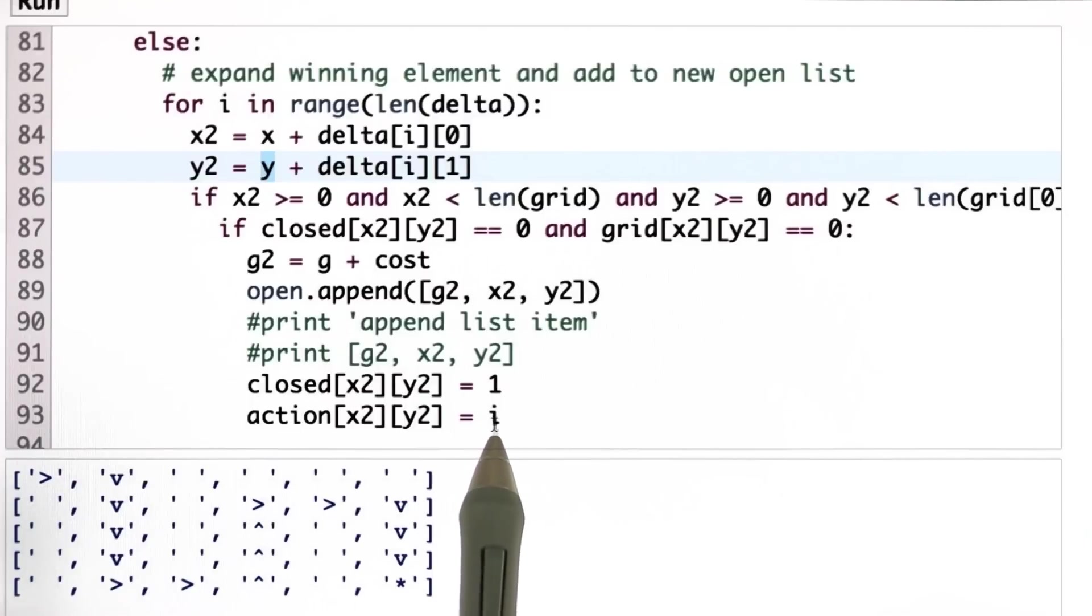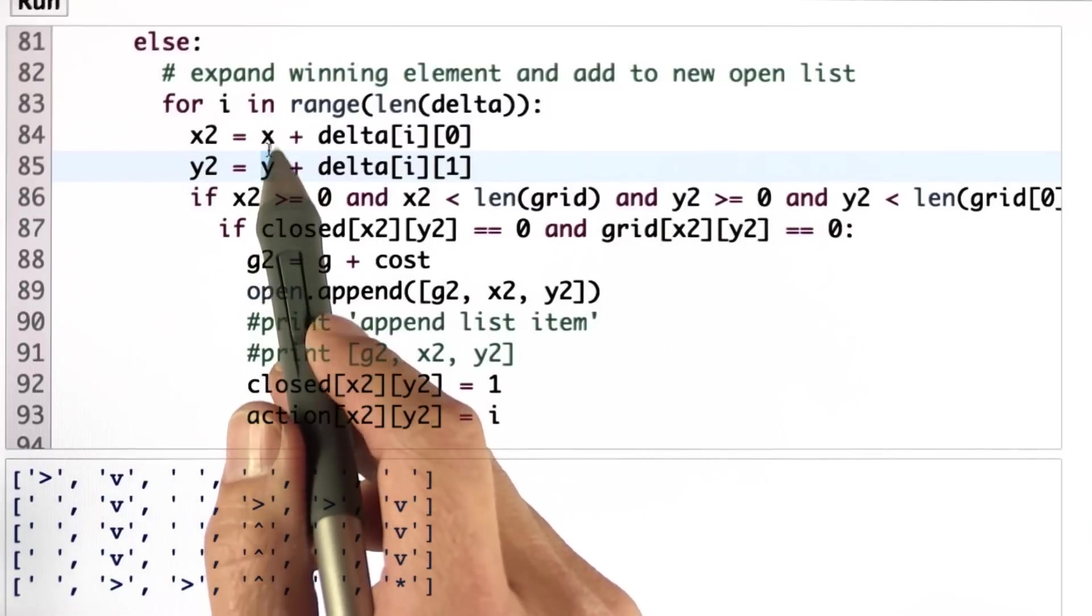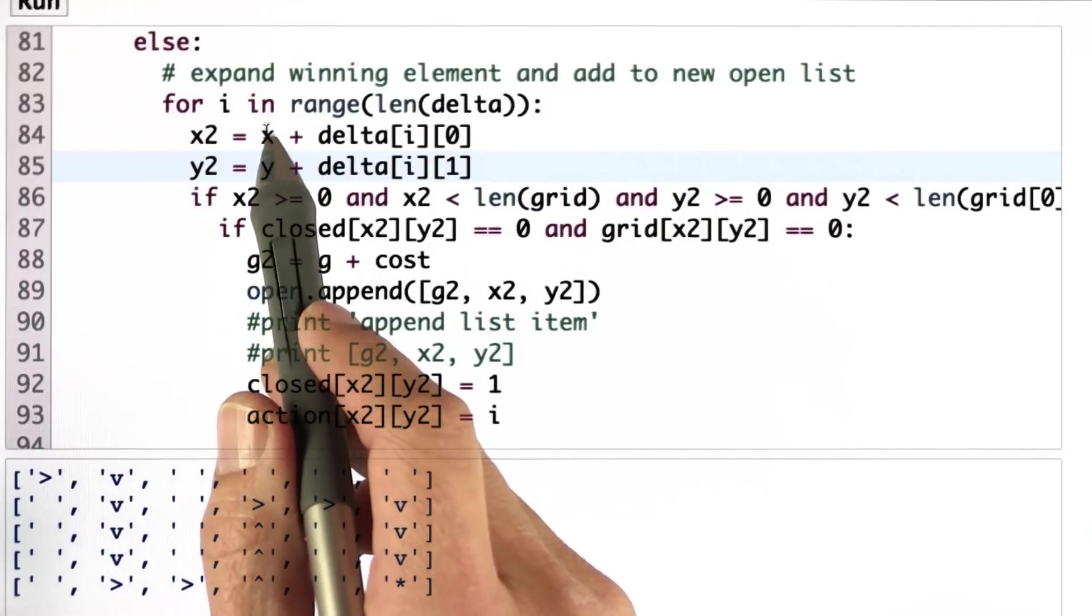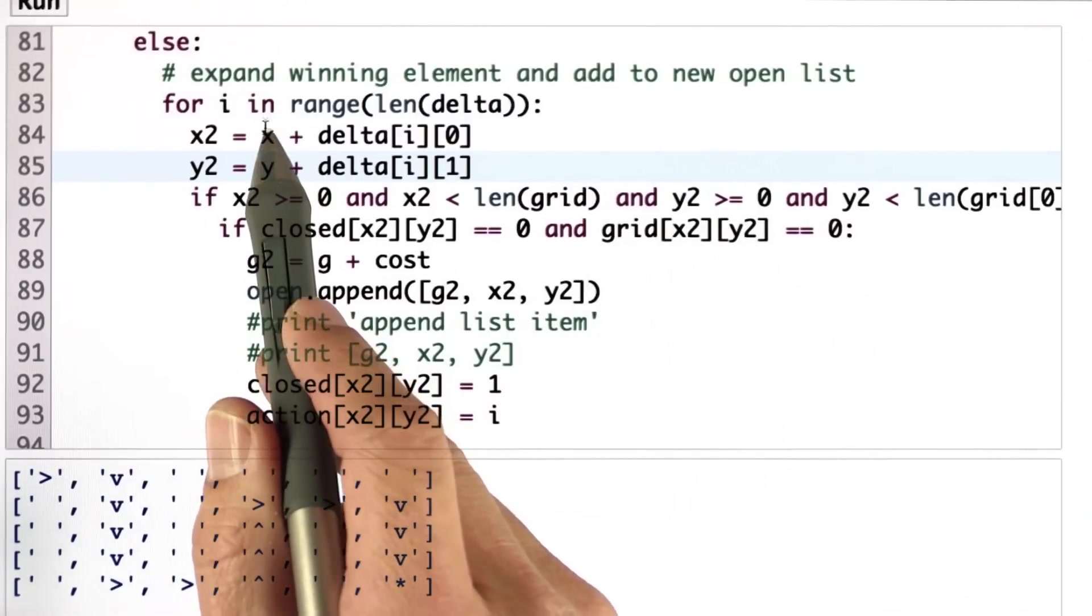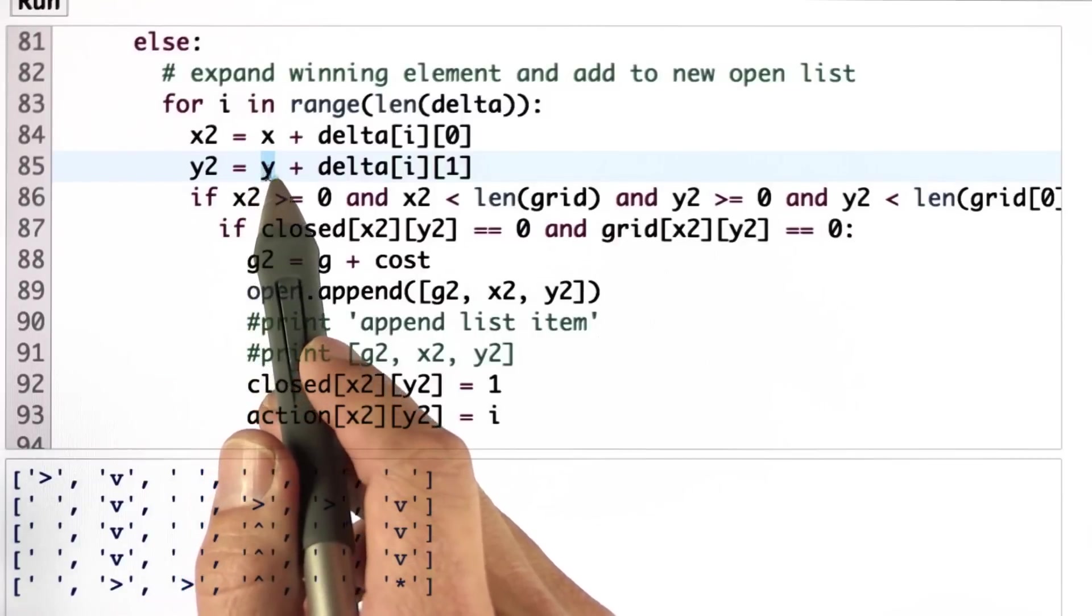Notice I don't associate it with x and y, the from state. And the reason is in the from state I'm trying out many different actions and I don't know which one succeeds.